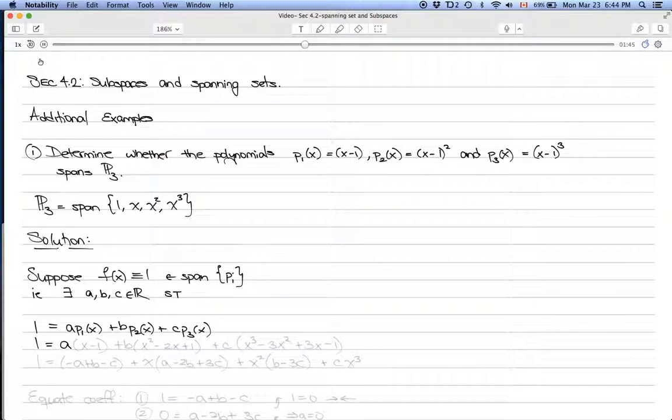we get 1 = a(x - 1) + b(x² - 2x + 1) + c(x³ - 3x² + 3x - 1). Just so it's easier to equate coefficients, I'm going to rewrite this even further.